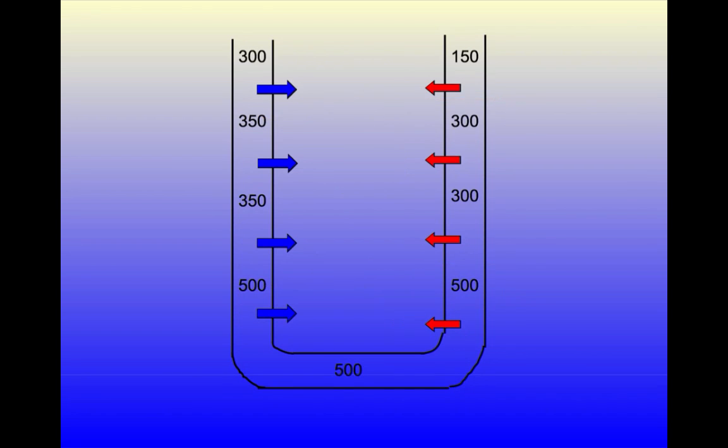In the next step, hypertonic fluid again rounds the hairpin turn and enters the ascending limb where it is available for solute removal. At the same time, fresh 300 milliosmolar fluid enters the descending limb from the top.